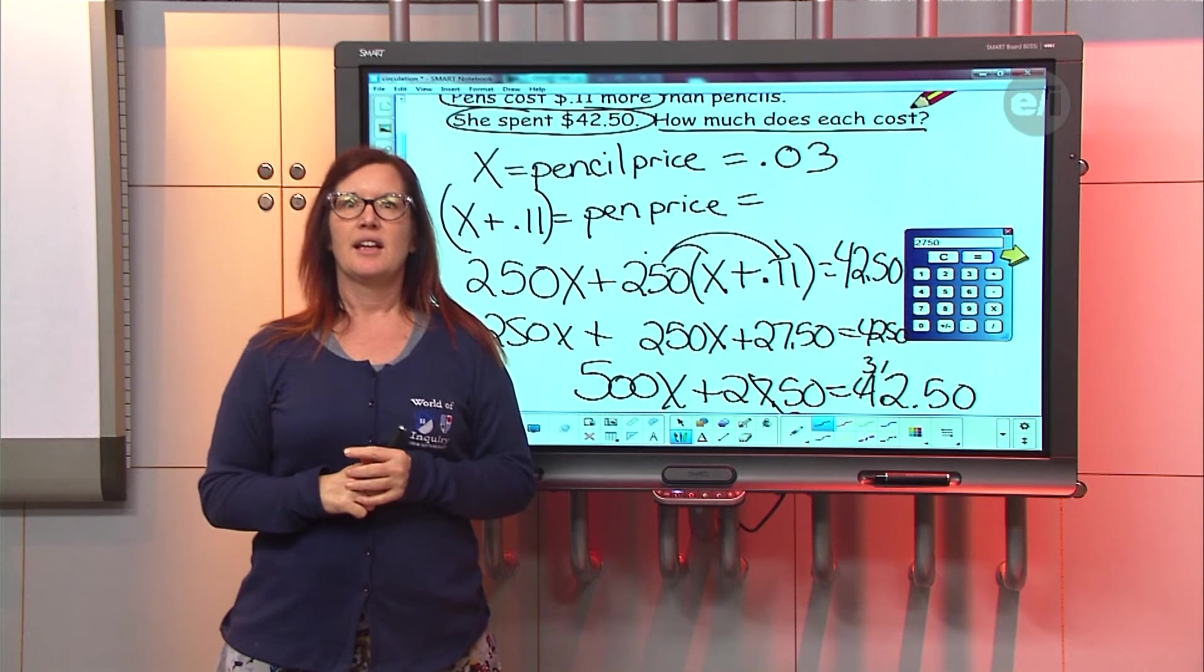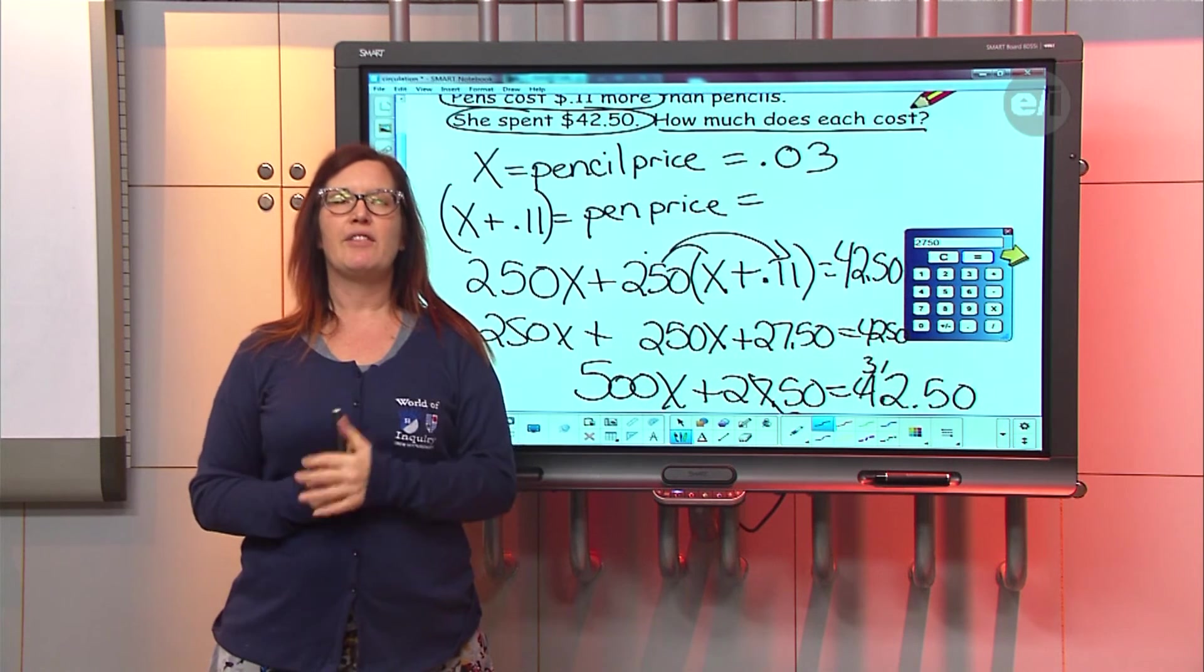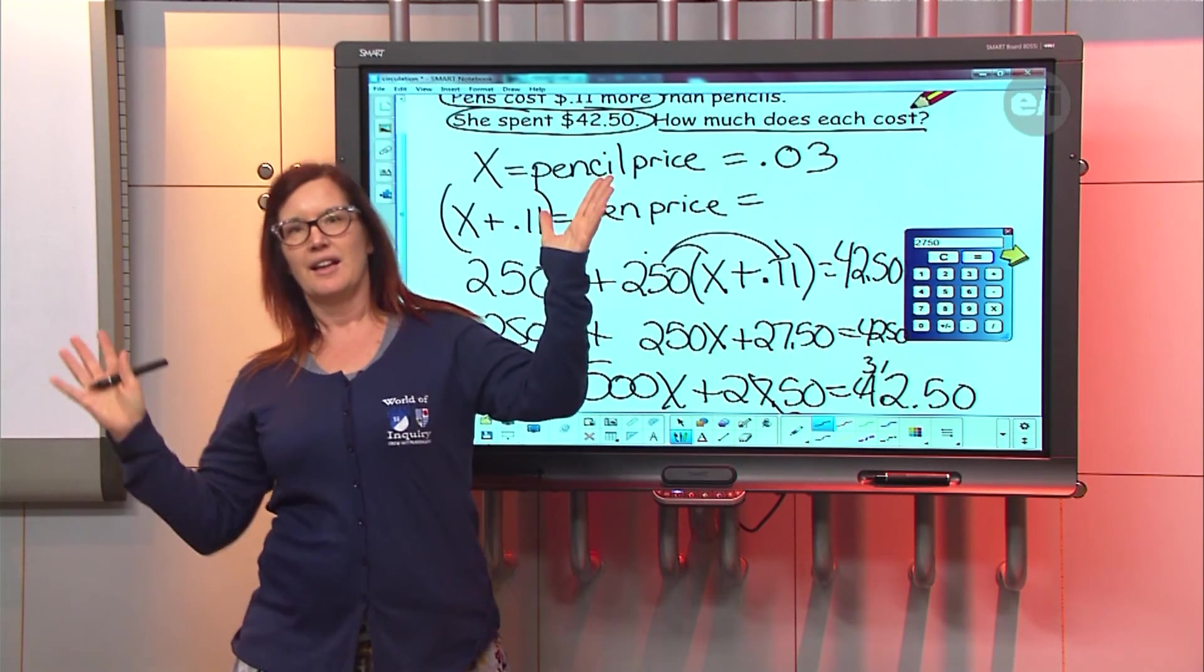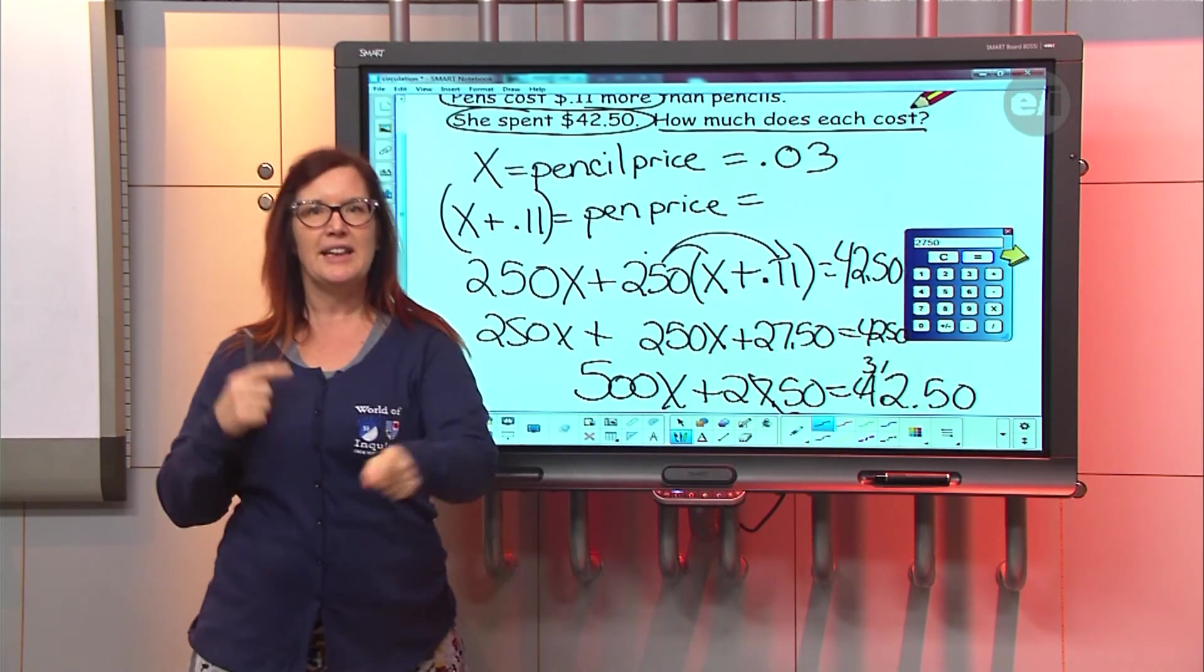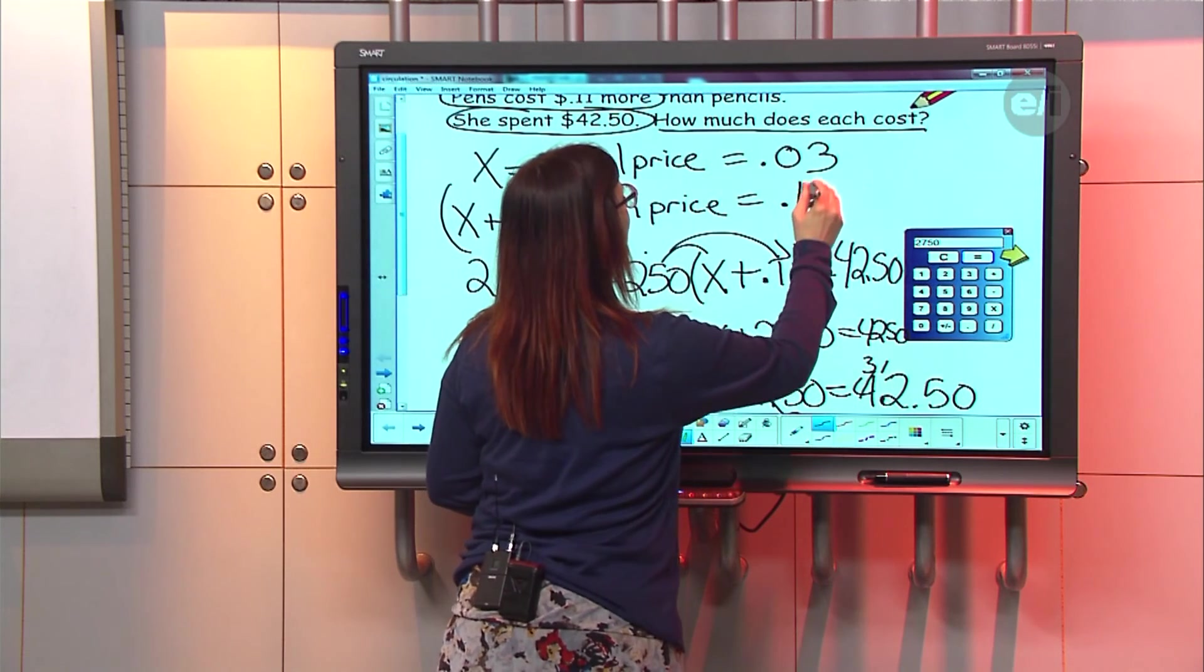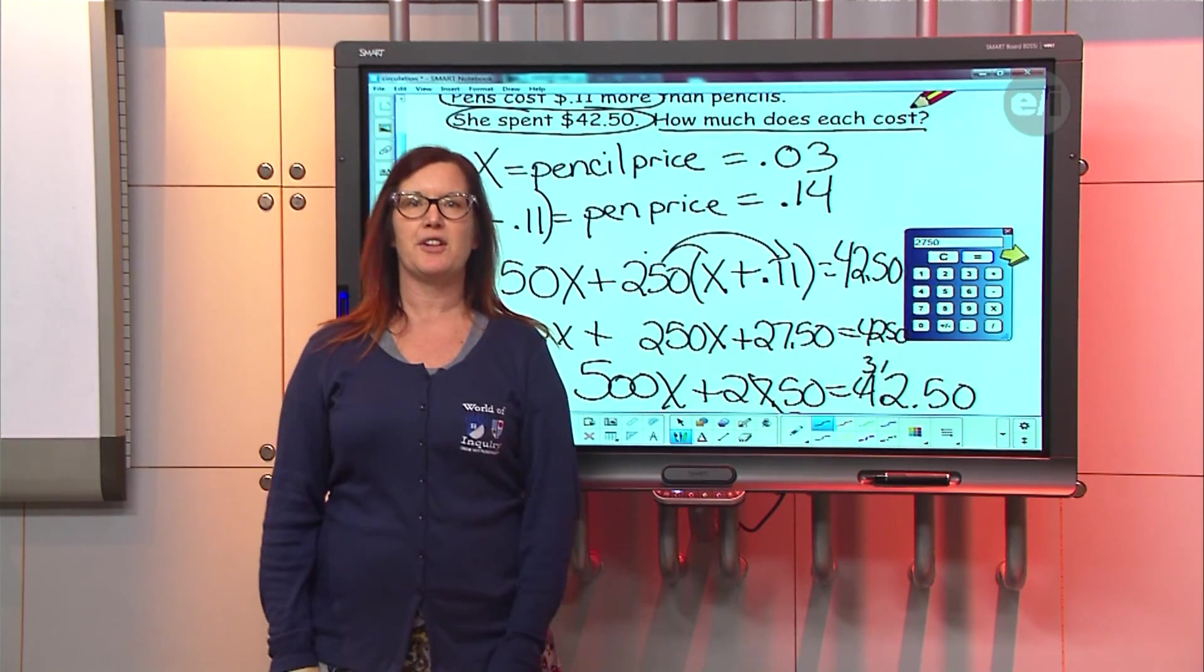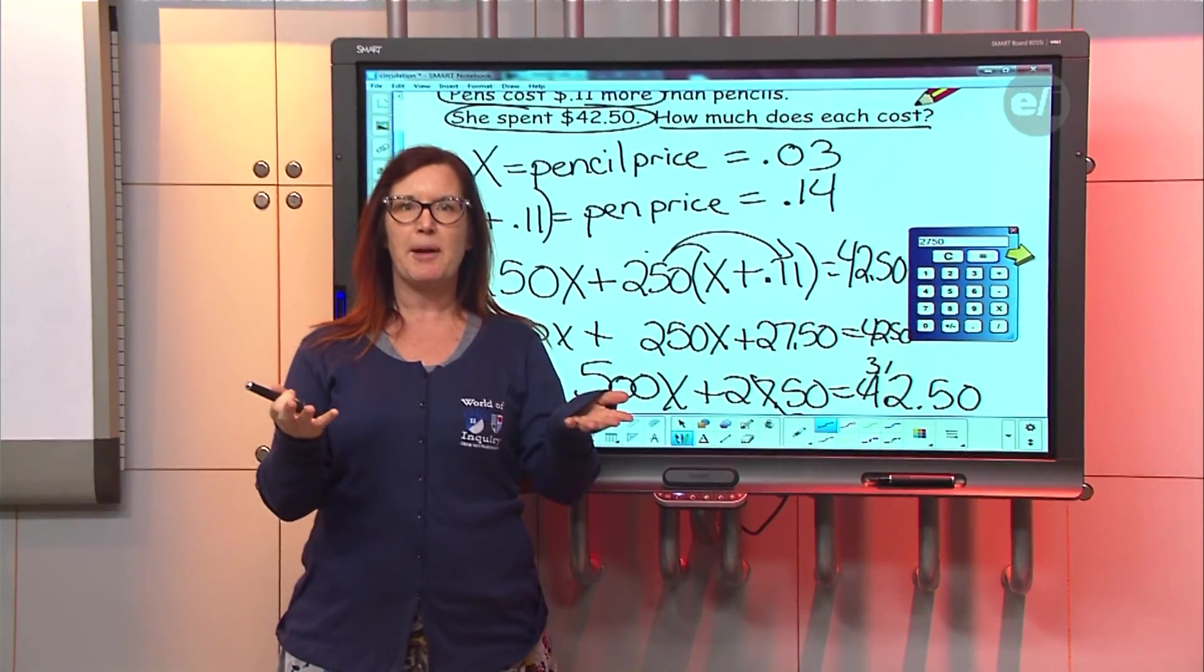Every pencil is going to equal 0.03. And then in order to get the pen price, what are we going to do to that number? Add 0.11. Add 0.11, and what is 3 cents plus 11 cents? 14. Yeah, we don't need a calculator. So the pencils are 3 cents and the pen price is 14. That is an amazing problem for a seventh grader to work on. Thanks for calling us up. I hope I helped you out.